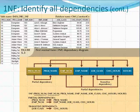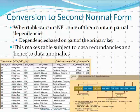We'll continue the transformation from the first normal form into second and third normal form. This was the dependency diagram obtained for the table in the first normal form. Now, to convert to the second normal form, what we need to do is to get rid of partial dependencies — these are dependencies based on the primary key.